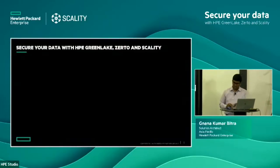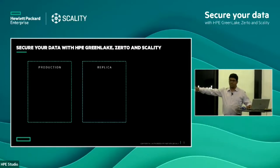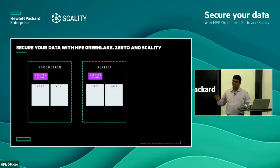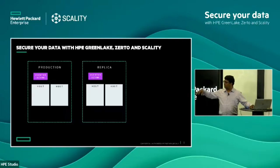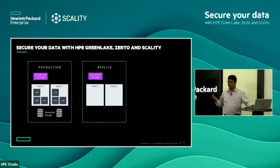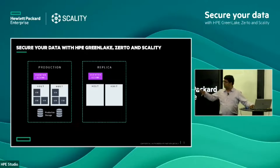Today I'm going to talk about a technical demo of the joint solution of HP GreenLake, Zerto, and Scality. Here is the complete demo overview. We have two environments: production and replica — also called site B, the secondary site or disaster recovery site. We have a virtual environment using multiple ESXi hypervisor hosts on both production and replica sites, managed by vCenter Server. The solution also supports Hyper-V hypervisor managed by System Center Virtual Machine Manager. This allows you to configure multiple production workloads stored on primary storage — which can be HP 3PAR, Nimble, or any similar storage — on HP ProLiant 380 or Synergy models.